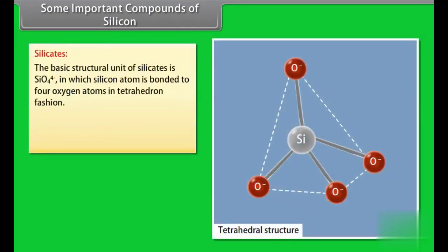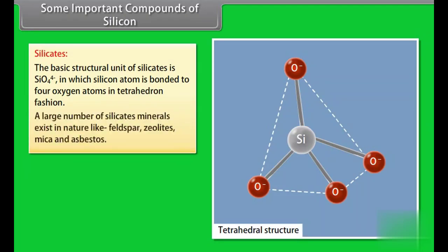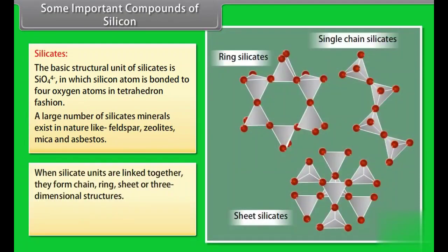Silicates. The basic structural unit of silicates is SiO4 4- in which silicon atom is bonded to four oxygen atoms in tetrahedron fashion. A large number of silicate minerals exist in nature like feldspar, zeolites, mica and asbestos. When silicate units are linked together, they form chain, ring, sheet or three-dimensional structures. Glass and cement are two important man-made silicates.